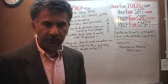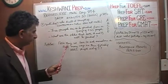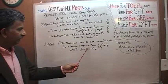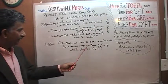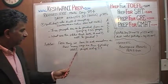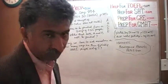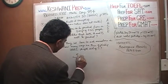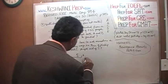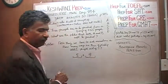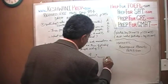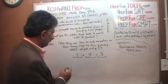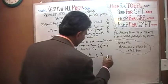The very first thing we have to do here is to ask ourselves: how many different ways are there of picking three people out of five? We have done this many times. This is a permutation. There are five different ways we can pick a first person, four ways to pick a second, and three ways to pick a third. Five times four is twenty, twenty times three is sixty.